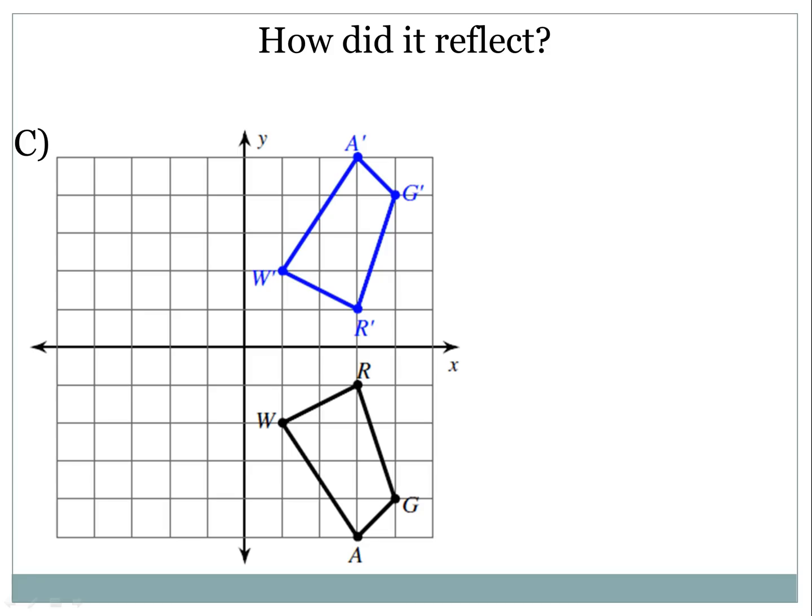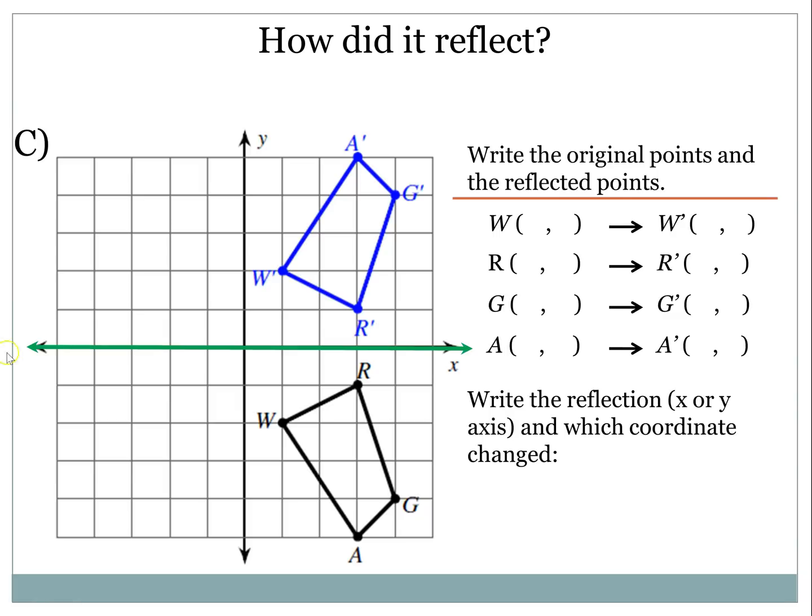And we're back. So, as we move on, we're just looking here at example C. How did it reflect? And the blue shape, and the one with the primes, really tells us that the top shape is the reflected shape. So the black shape is the original. So we want to know, and we see that it reflected over the x-axis, which is now blinking in green. And I want you to pause and write the original points and the reflected points. So the original points here in the left column are from the black shape on your screen. And the primes are from the blue shape on your screen, and go ahead and write those coordinates.